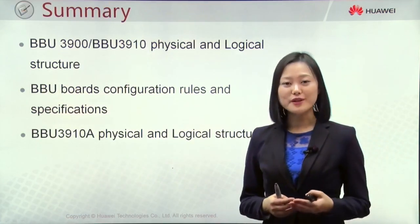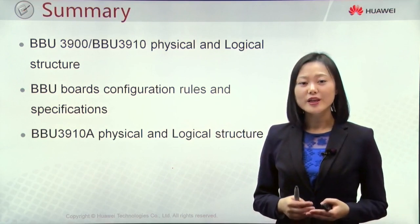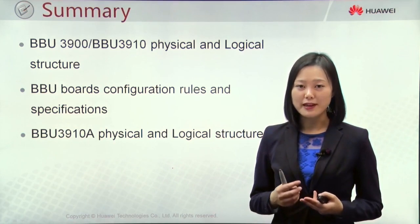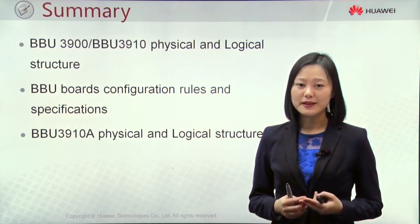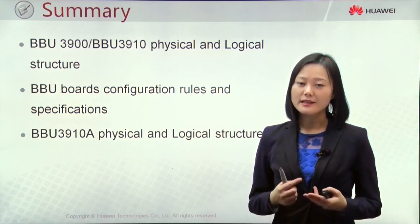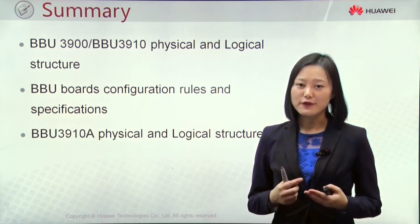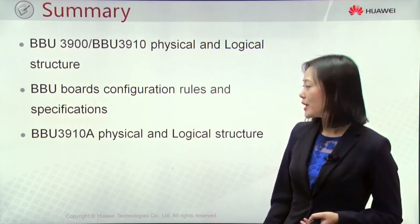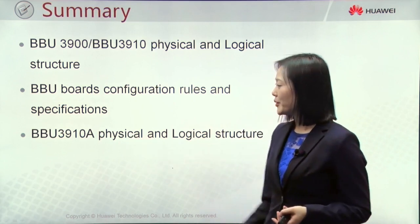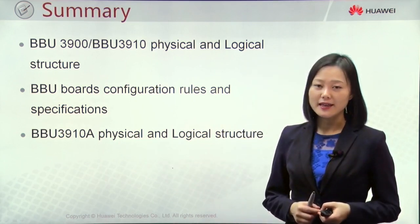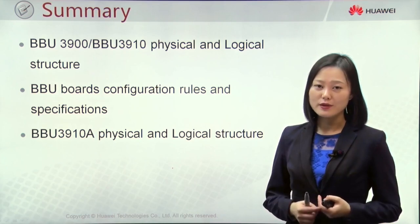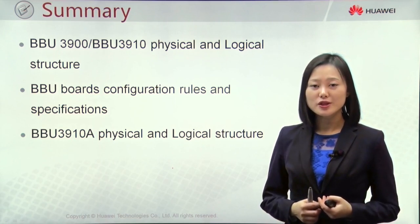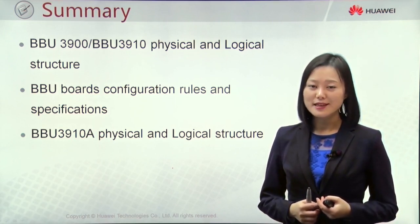That's all for this chapter's content. We introduced the physical and logical structure of BBU-3900 and BBU-3910, along with the important boards and modules, their specifications, and slot configurations. At the end, we introduced the new blade BBU — BBU-3910A — covering its logical and hardware structures. In the next chapter, we will continue to introduce the RF unit. Thanks for your time.